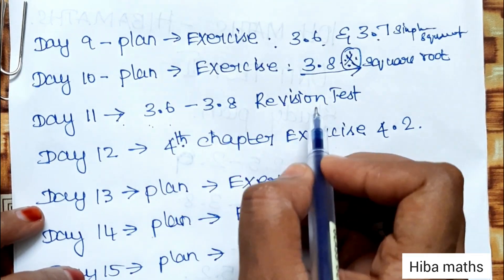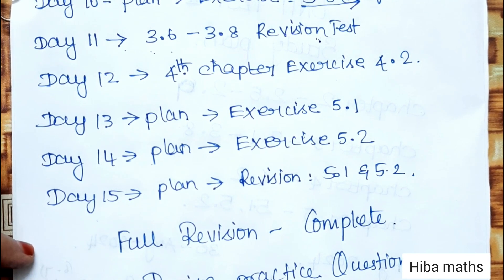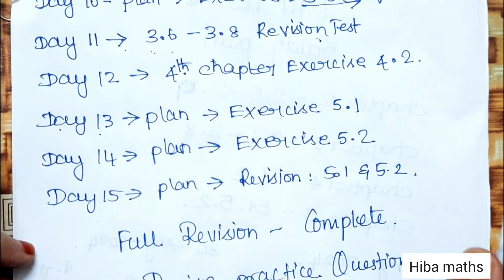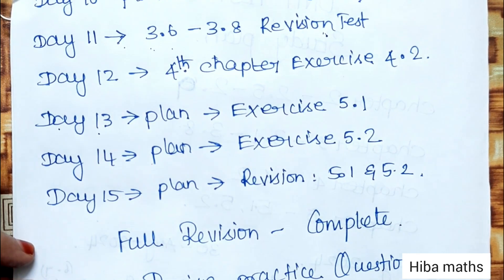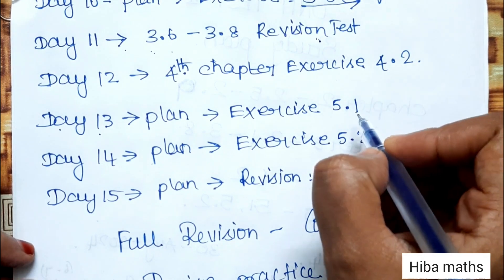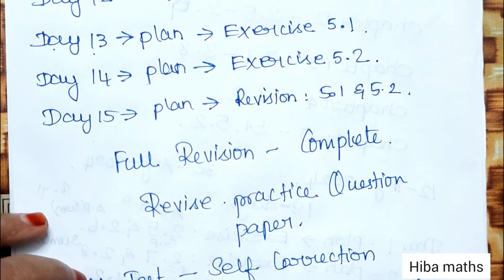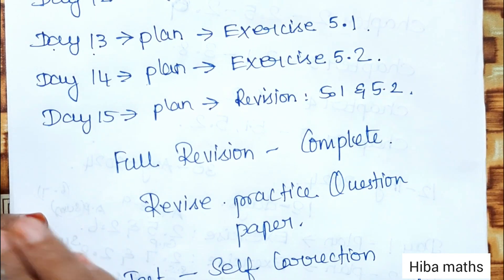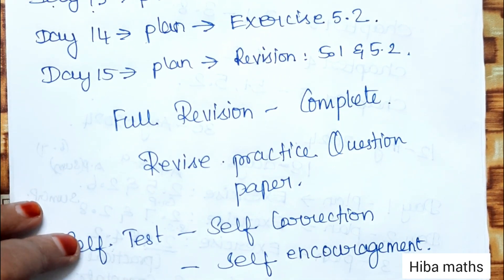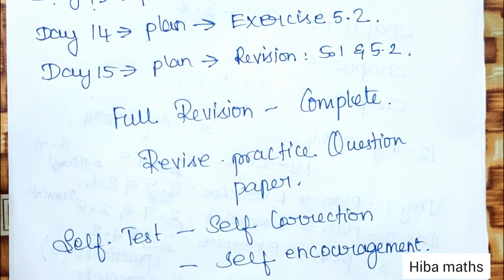Day 11 covers exercises 3.6 to 3.8 for revision. Day 12 is exercise 5.1. If you follow this method, you will improve.